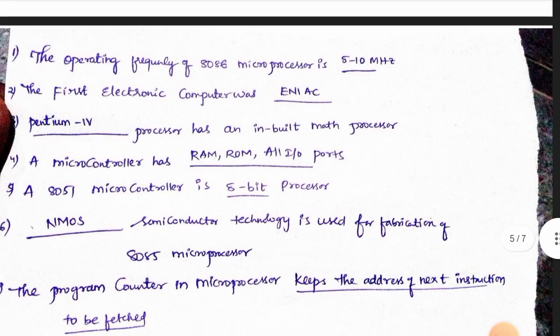The operating frequency of the 8086 microprocessor is 5 to 10 MHz. The first electronic computer was ENIAC. The Pentium 4 processor has an inbuilt math co-processor. The microcontroller has RAM, ROM, input, and output — so choose the microcontroller. The 8051 microcontroller is an 8-bit processor.